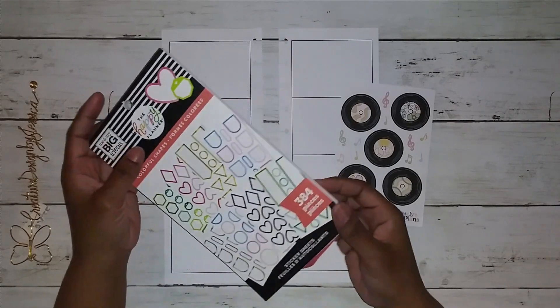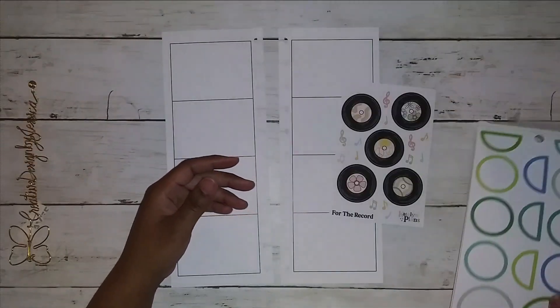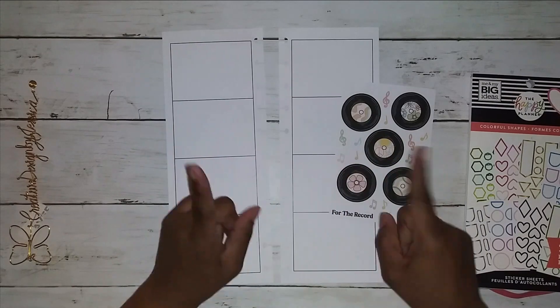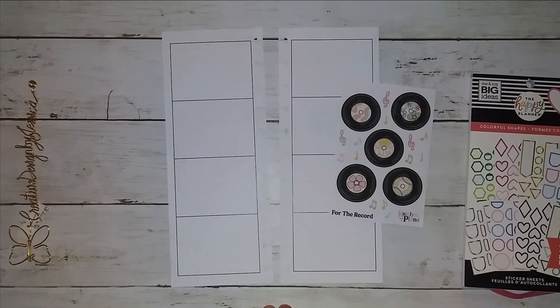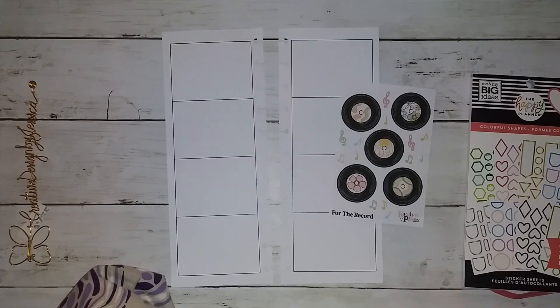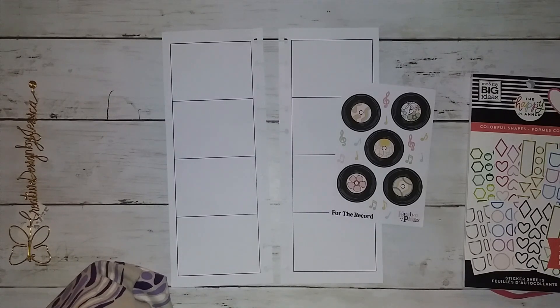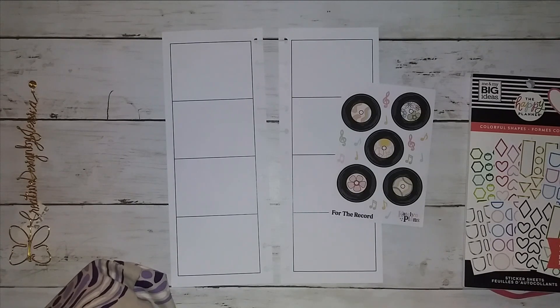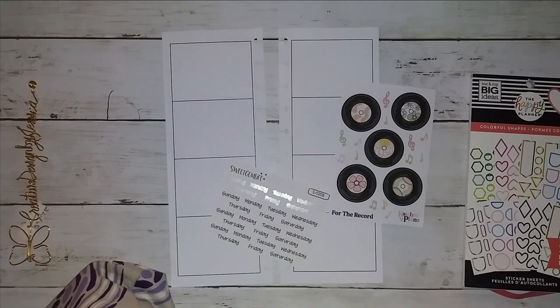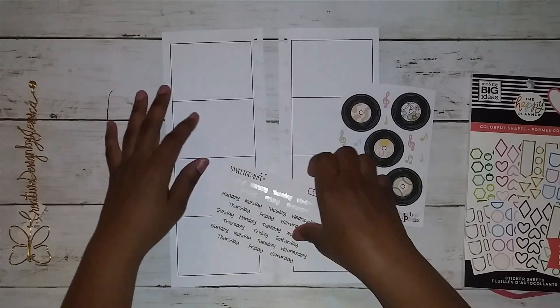So I went looking through my stash and I remembered that I had the Advent Calendar for Caitlin Plans. And I saw these cute little records and I thought, why not use these? And then I pulled out my sticker book with these colorful shapes and thought that I would pull some circles out and kind of put it together. I do have some days of the week stickers and some date dots that I will pull also out.